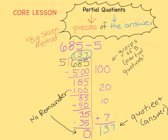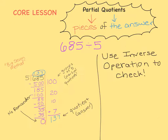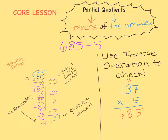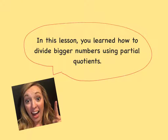Sometimes you'll see people write their answer on top of the big 7. How can we check our answer to make sure it's correct? Let's use inverse operations to check. We think we took 137 groups of 5 out of 685, so let's multiply 137 times 5 to see if that really is 685. After you multiply, you see that our answer is the same as our original dividend. That means we can be confident when we say 685 divided by 5 equals 137. In this lesson, you learned how to divide bigger numbers using Partial Quotients.